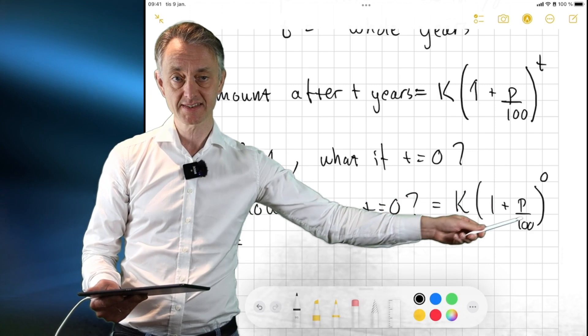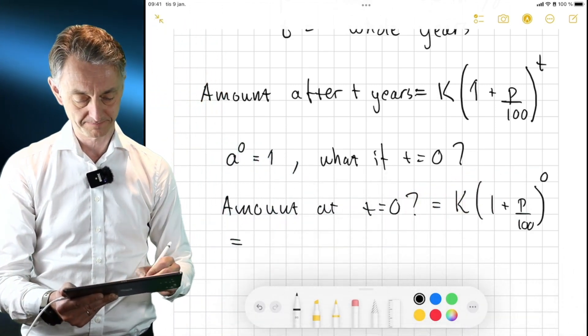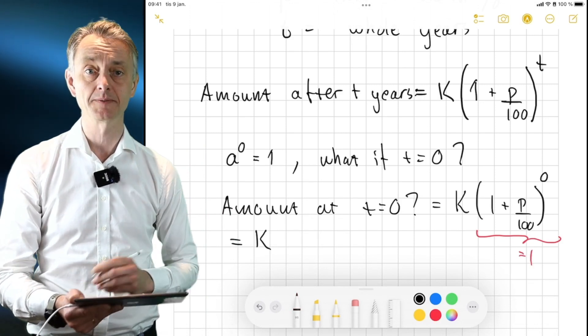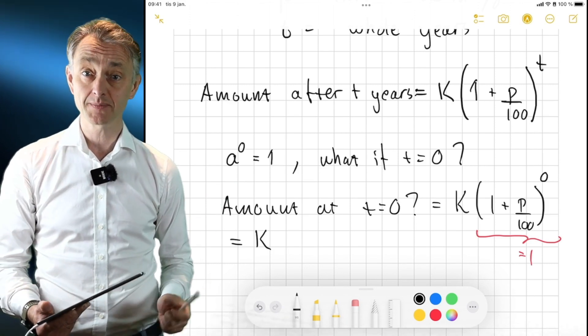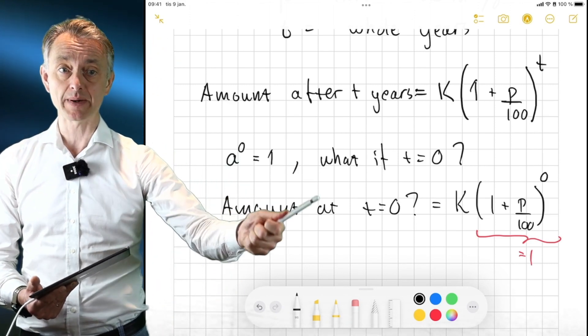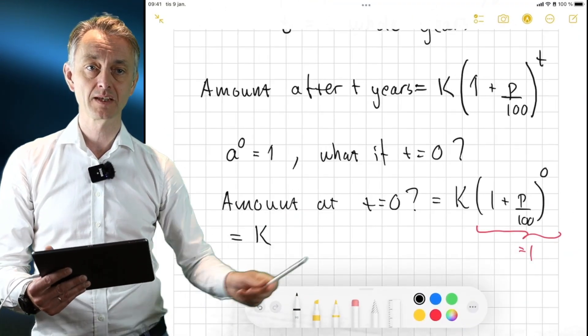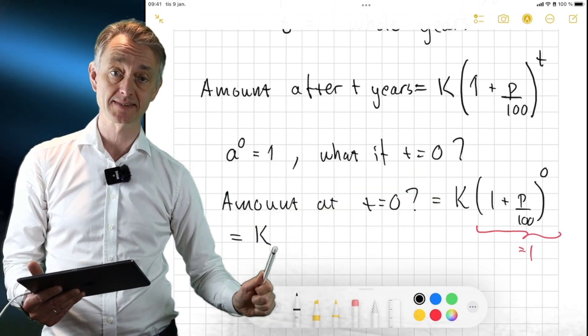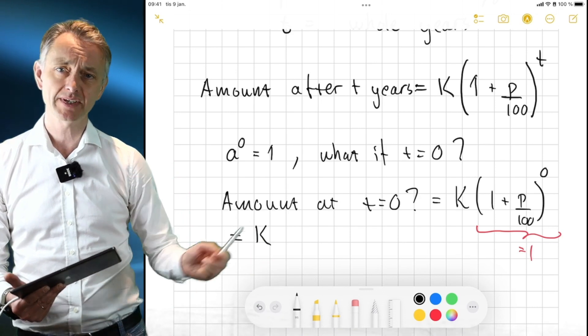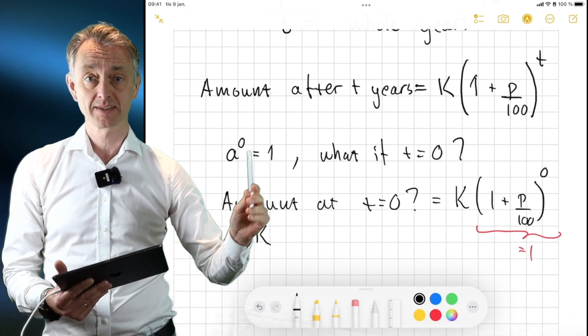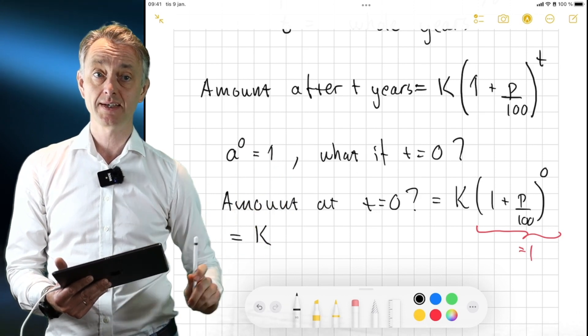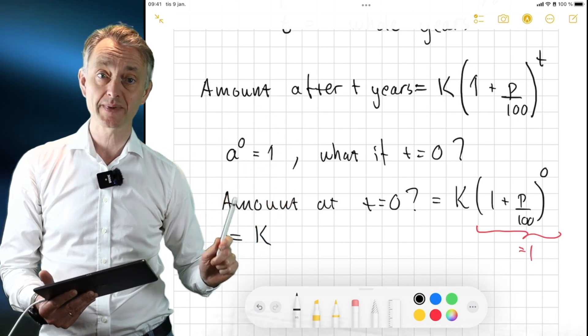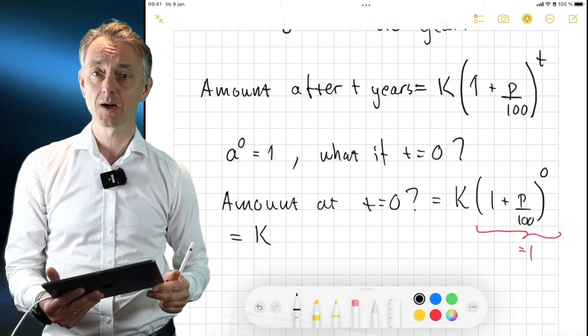That is equal to, now we know that this thing here is going to be 1. So it's just going to be K. So intuitively, that means that in year zero, when I walked into the bank, I had 100 kronor. And that was the K. And thus, when we apply the formula, we see that, yes, it will be just 100 kronor. So here, I think you can see that the rule that a to the power of 0 is equal to 1. And in this case, the base, that's 1.05 to the power of 0 is 1. It makes sense here, because that is the amount of money that I started with.